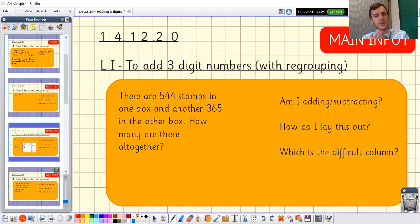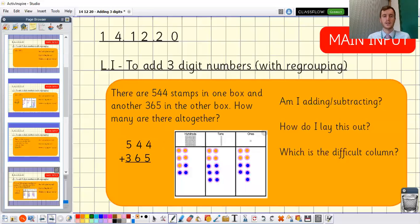Now the first question, am I adding or subtracting? I'm thinking that word altogether is really important because if we're putting things together we're usually adding them. I'm also thinking that there's 544 in one box and another 365 in another box. So we've got two boxes. If we want to work out the total we've got to add those numbers together as well. Let's have a look at how we can do that. So once again I've laid it out like a column method. I've lined up my hundreds. I've lined up my tens. I've lined up my ones. And I've got my picture next to it again.